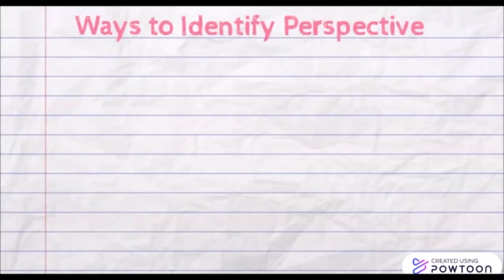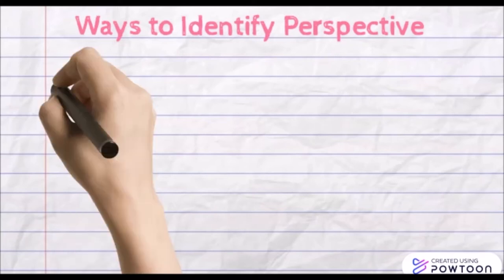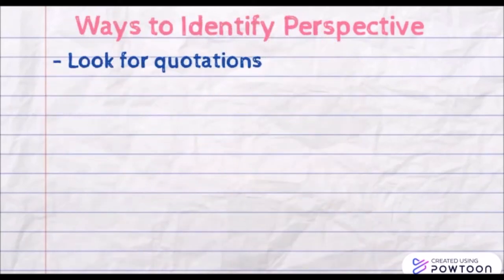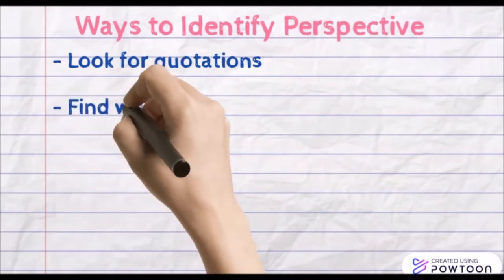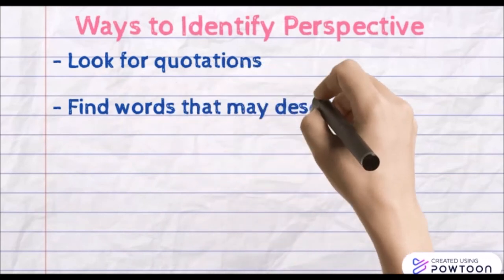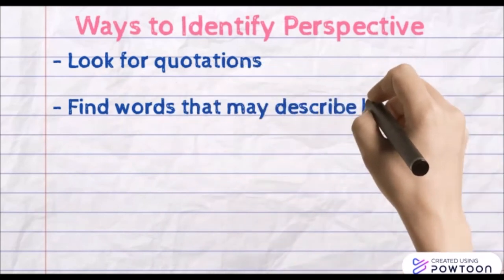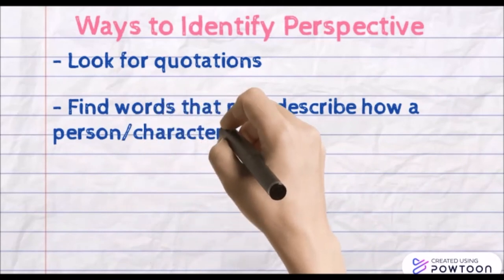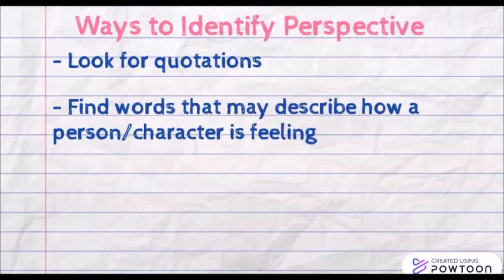This has given us some different ways to identify perspective. First, we can look for direct quotations that will actually tell us what the perspective of a certain person might be. We could also find words that may describe how a character or person within a text is feeling, and through those feelings, we can get an idea of their viewpoint or perspective.